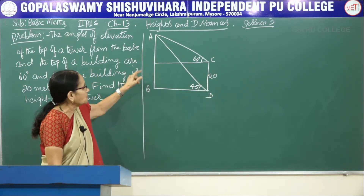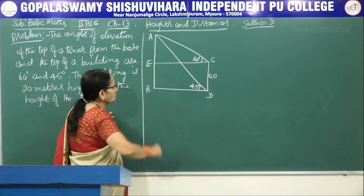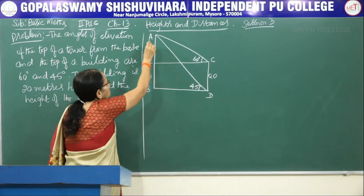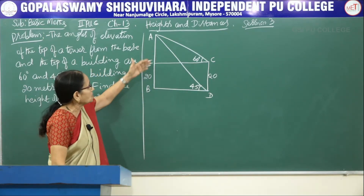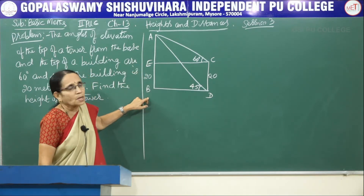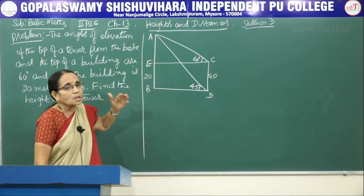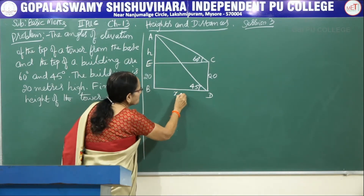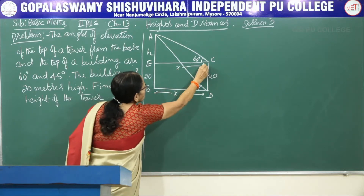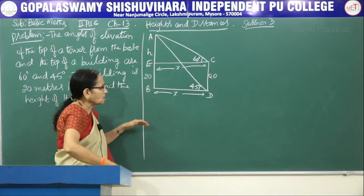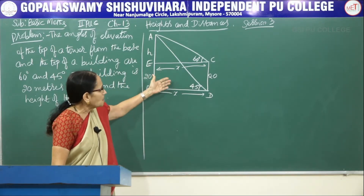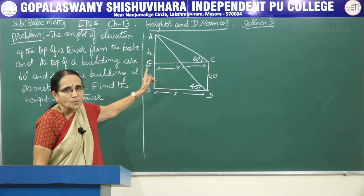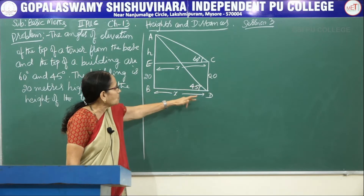Let me denote AE as H. Now when CD equals 20, BE being equal to that will also be equal to 20. So when you want to find the height of the tower, AB has to be calculated. We already know BE. So if we calculate only AE and add them, that gives the total height of the tower. Let me denote AE as H. This distance BD, which is also equal to CE, let me denote it as X.